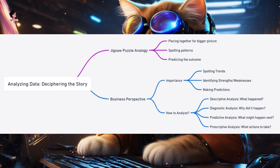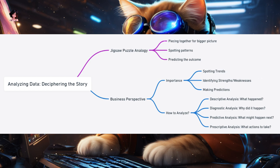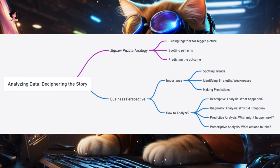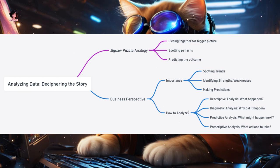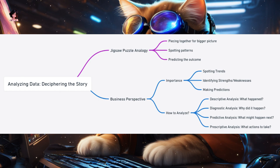How to analyze data: Descriptive analysis is about understanding what happened — for instance, how many visitors did your website get last month? Diagnostic analysis dives deeper to understand why something happened, like why there was a spike in website visits on a particular day. Predictive analysis uses past data to predict future outcomes — if you run a similar campaign next month, can you expect a similar spike in visits? Prescriptive analysis is about recommending actions — if a product page gets many visits but no sales, maybe you need to tweak the product description or pricing.